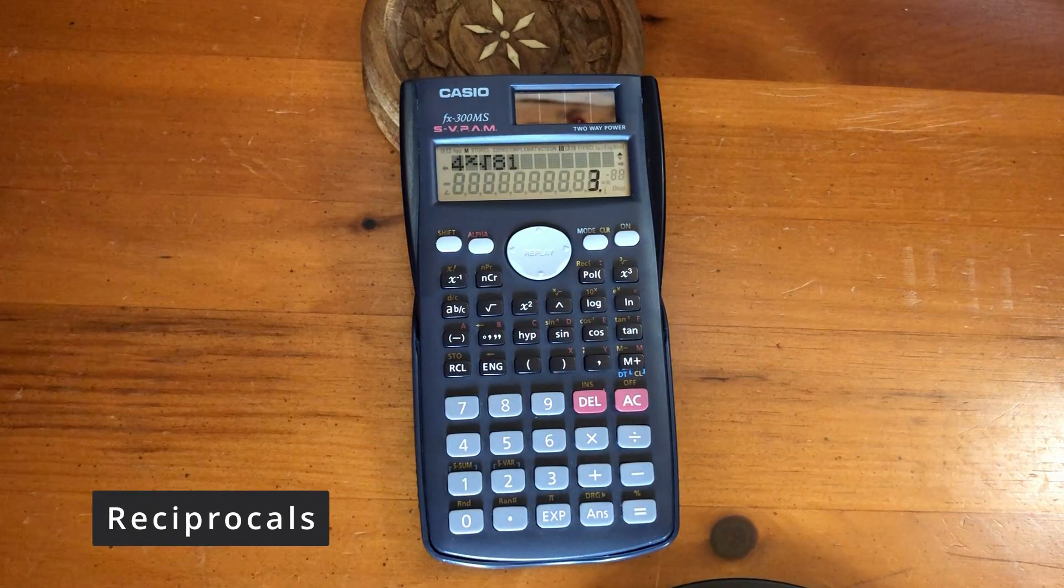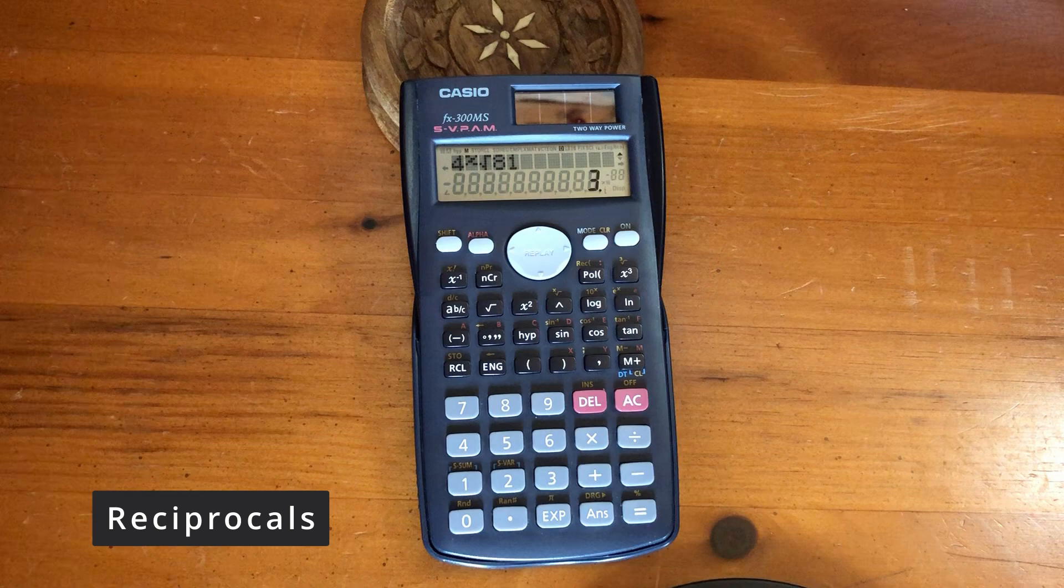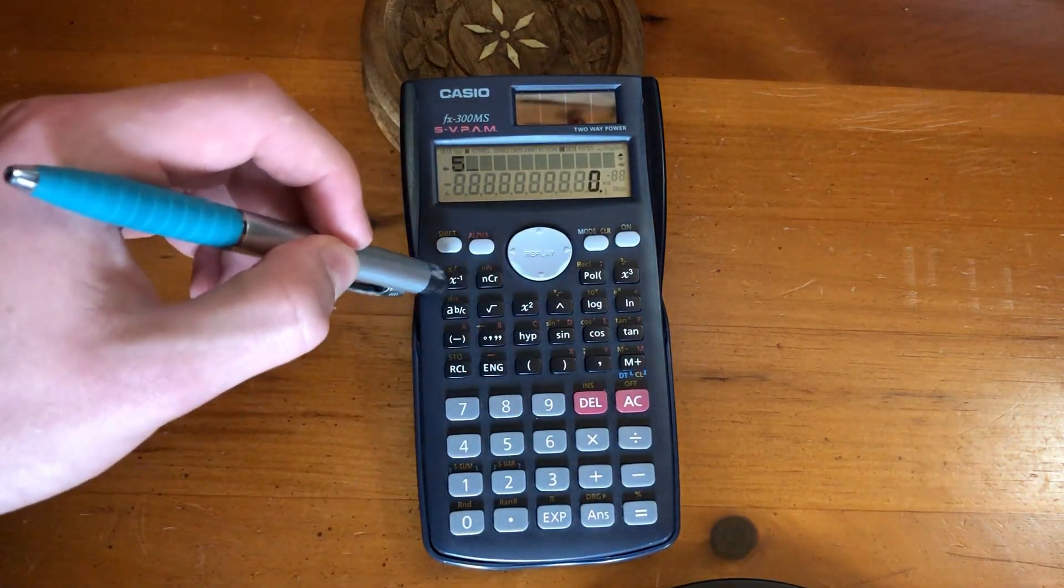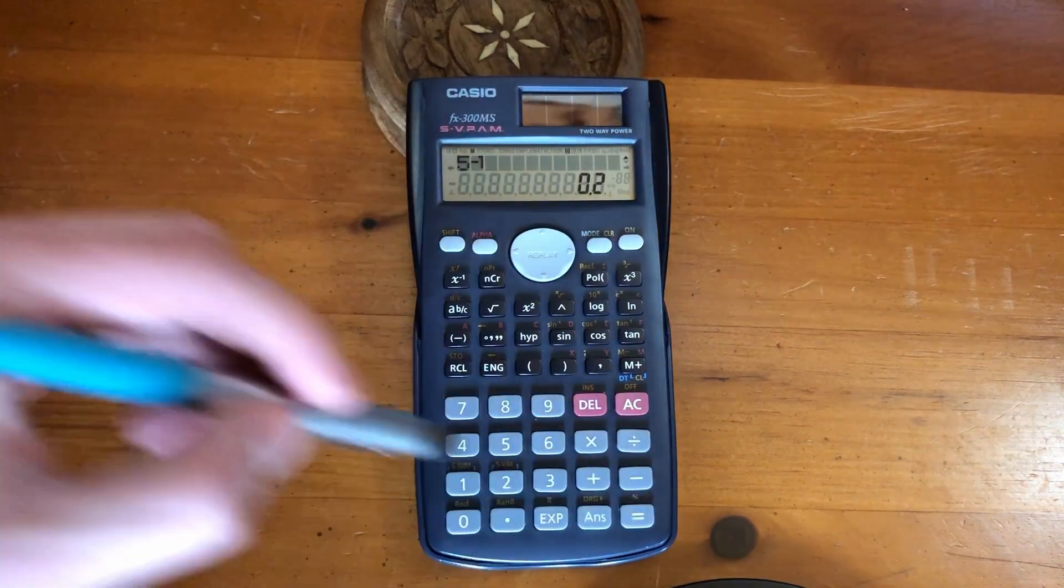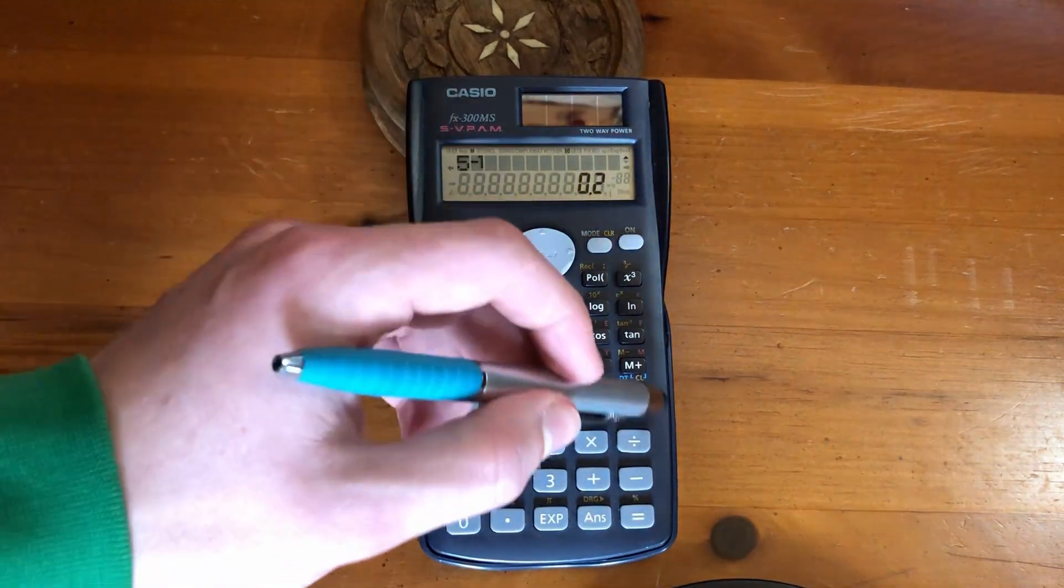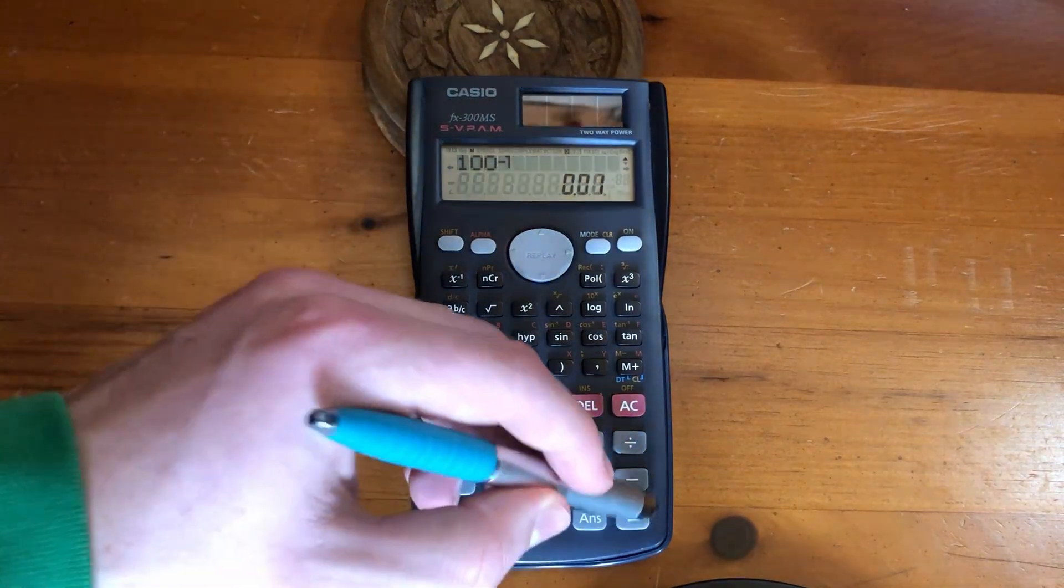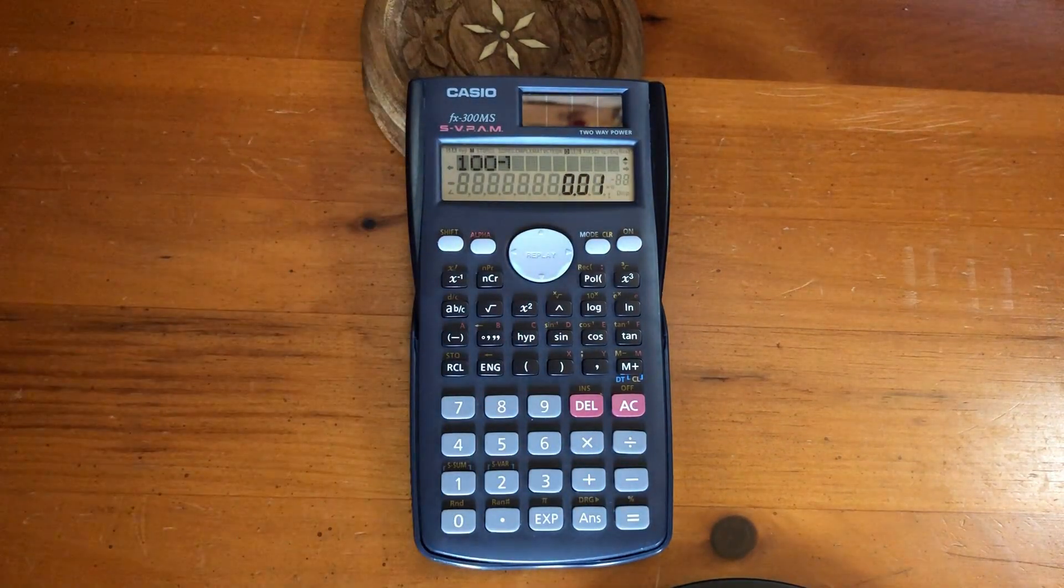To find a reciprocal, type in a number, in this case 5, then hit the x^-1 button. This equals 0.2. Another example: the reciprocal of 100 equals 0.01. Thanks for watching!